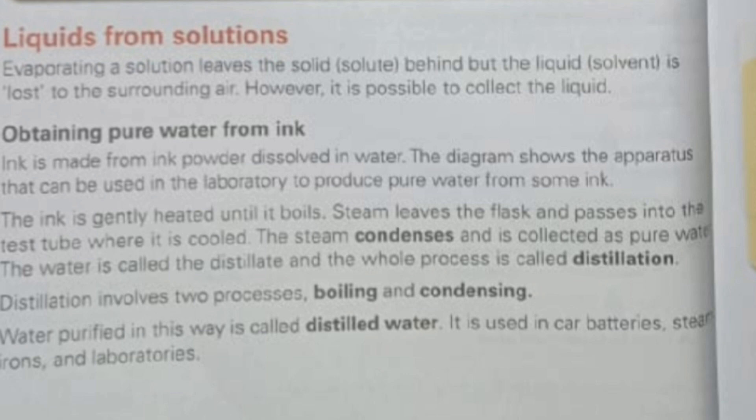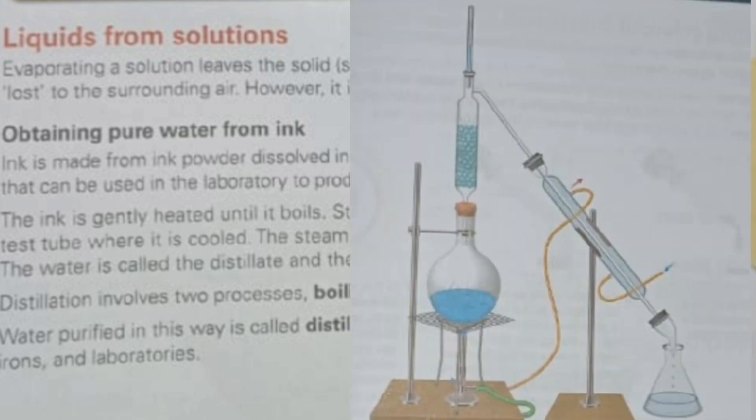If we want to save the water, then we need distillation. When distillation takes place, you can understand it with this example: you have pure water, and ink is made from ink powder dissolved in water. Do you know how to make ink? Ink powder is dissolved in water.